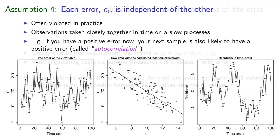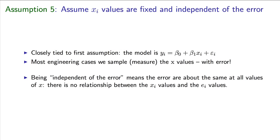The fifth assumption we make is that our x values are fixed and independent of the errors. This is closely related to the first assumption, and is in fact required to make that first assumption complete. In most engineering cases, we sample the x, and so it is not fixed. It actually has error as well, and this assumption is violated.